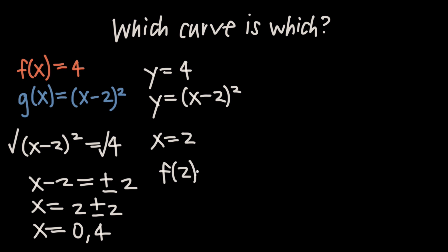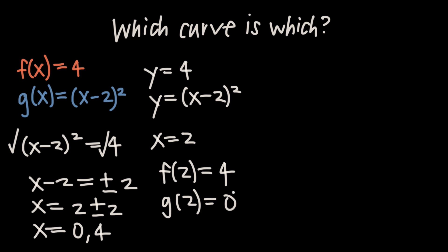When we plug x equals 2 into f, since f equals 4 has no x variable, f is still just 4. For g, we get 2 minus 2 equals 0, and 0 squared is 0, so g equals 0. All we care about is which value came out larger: 4 is obviously greater than 0, which means f is the top curve and g is the bottom curve.